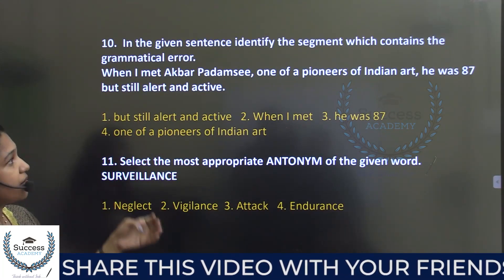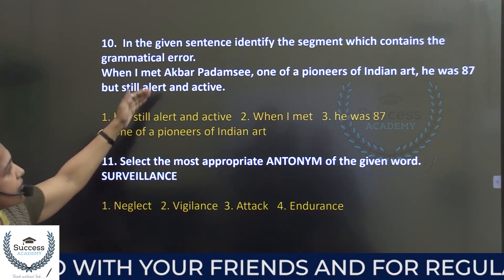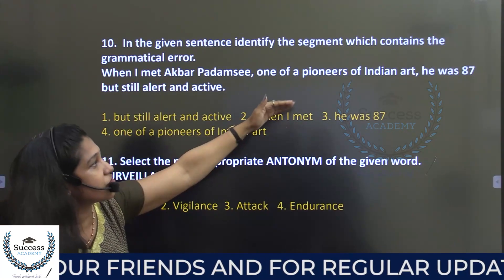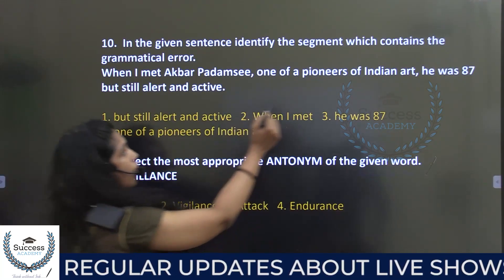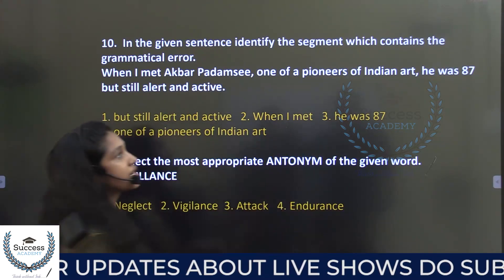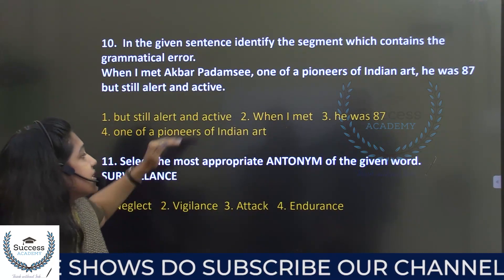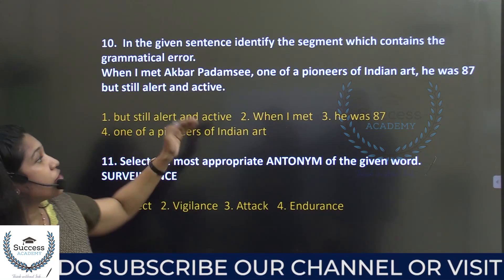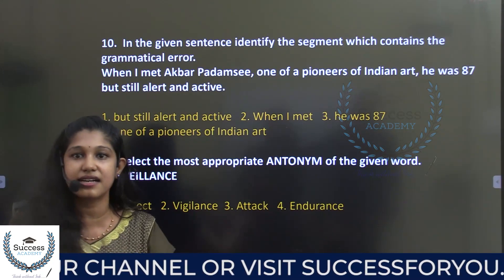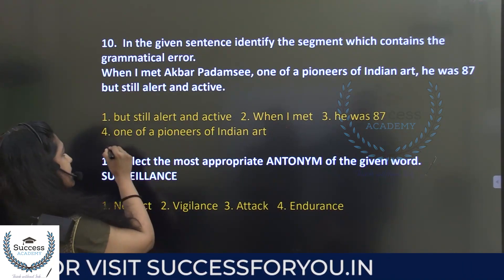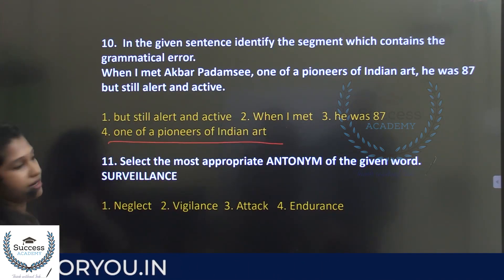In the given sentence, identify the segment which contains the grammatical error. 'When I met Akbar Palamsi, one of a pioneers of Indian art, he was 87 but still alert and active.' The error is 'one of a pioneers' — it should be 'one of the pioneers of Indian art.'